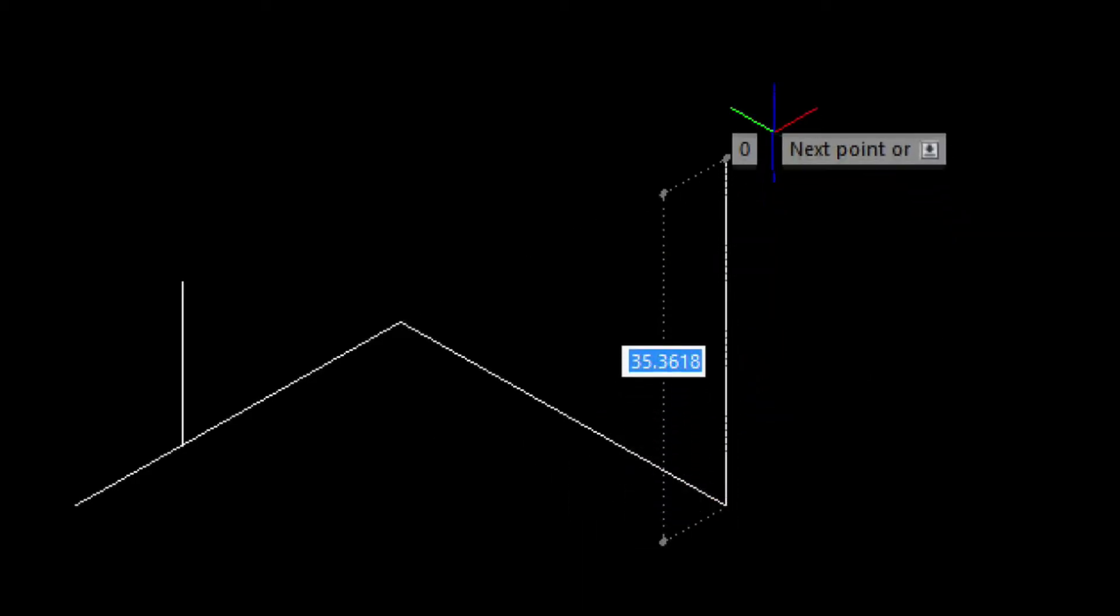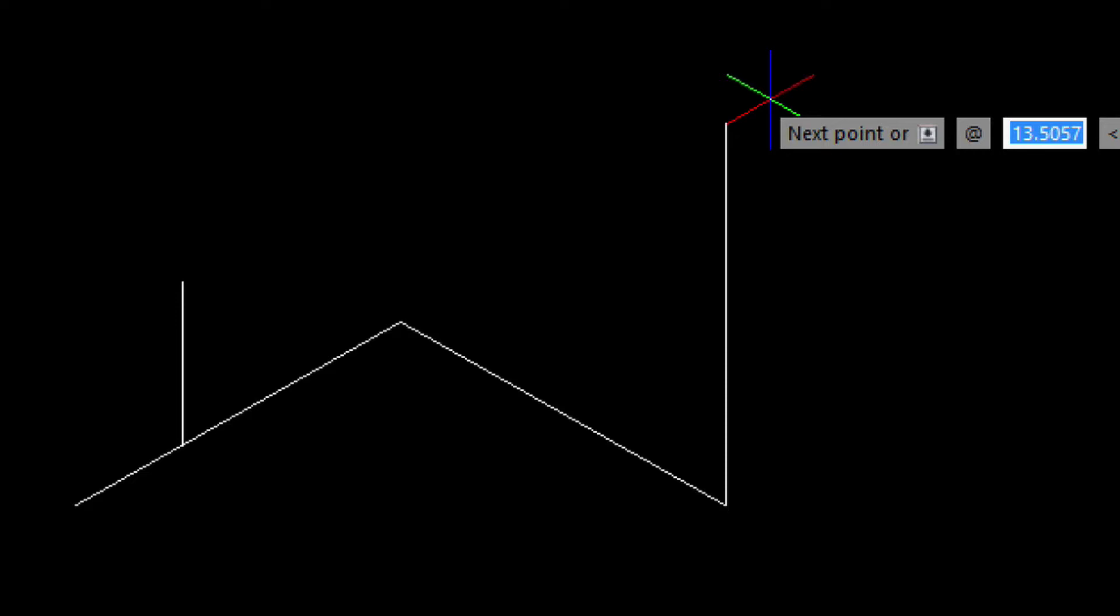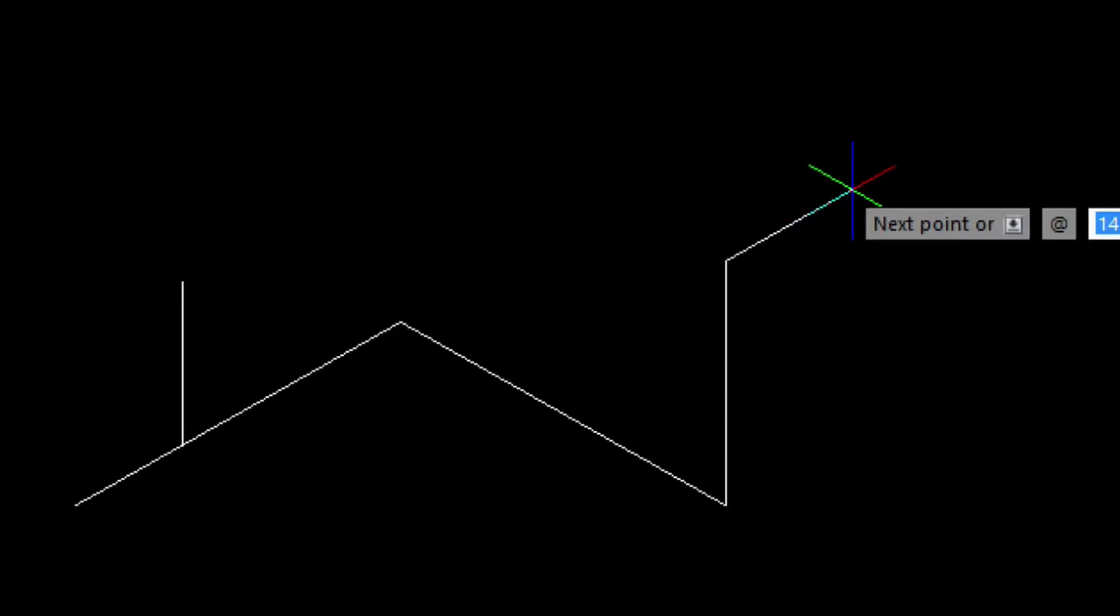For example here, I'm entering the beginning point on a line. Then, I'm pointing the cursor the way I need to go. And lastly, typing in 2 feet. With ortho turned on, I can also do the same sort of input in the Z direction.